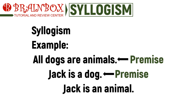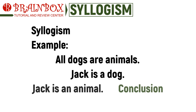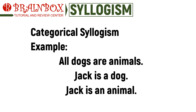The first two lines we have are the premises — they establish two rules: 'all dogs are animals' and 'Jack is a dog.' The third statement, 'Jack is an animal,' is our conclusion. We can verify if a conclusion is logical by making use of logic. In this example, Jack is indeed an animal if we follow the rules set by the premises, because Jack is a dog and all dogs are animals — it makes sense that Jack is an animal.